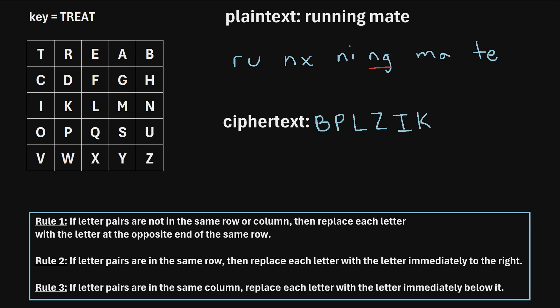Moving on to N, G — we find N and G, then form a rectangle using them as corners. Since N and G are not in the same row or column, we use rule one again. N is swapped with the letter at the opposite end of its row, which is M. And G is swapped with the letter at the opposite end of its row, which is H.